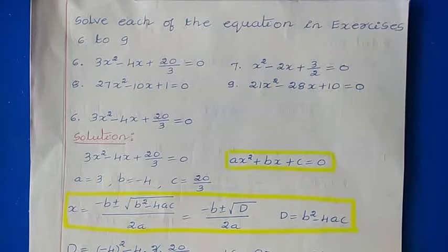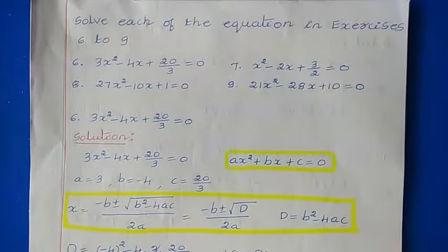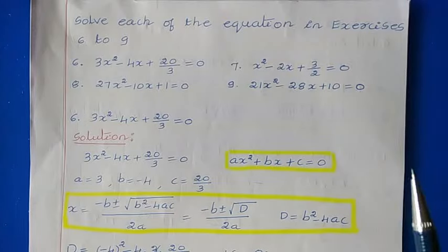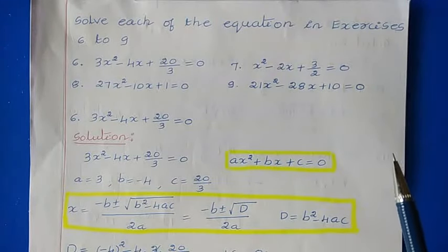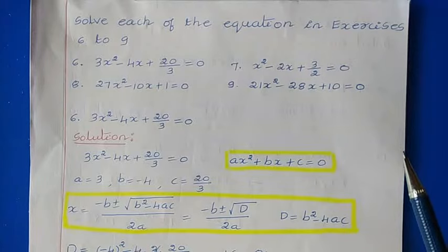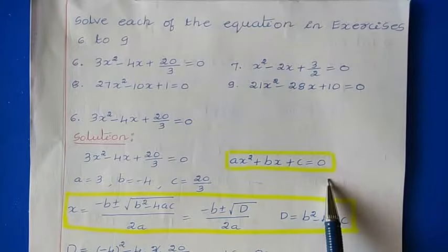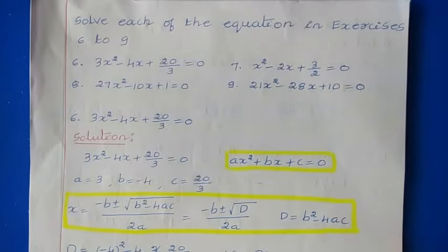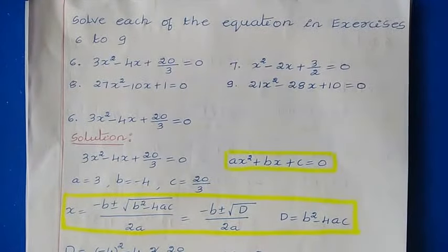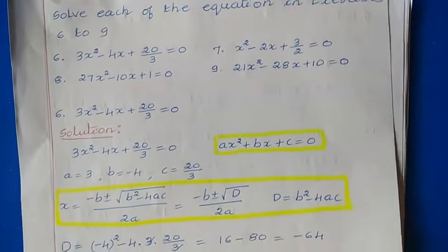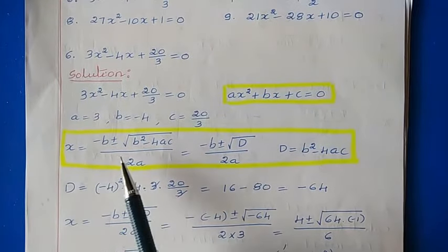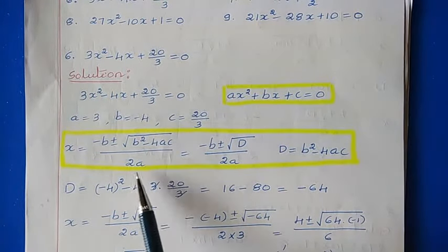Hi, in this video I am explaining the miscellaneous exercise on chapter 5, complex numbers and quadratic equations, questions 6 to 9. We have to solve each of the equations. These equations are of the form ax² + bx + c = 0, known as a quadratic equation. The roots can be found using the formula x = (-b ± √(b² - 4ac)) / 2a.